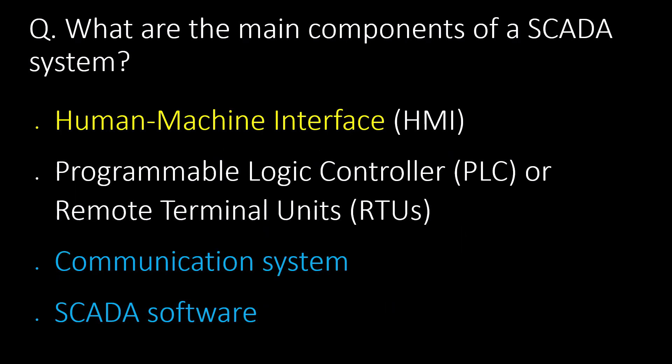What are the main components of a SCADA system? The main components are: Human Machine Interface (HMI), Programmable Logic Controller (PLC) or Remote Terminal Units (RTUs), communication system, and SCADA software.